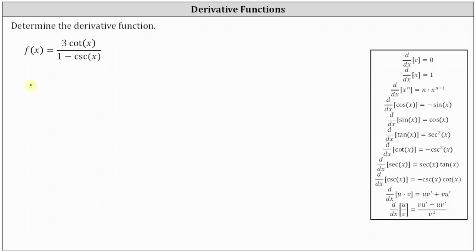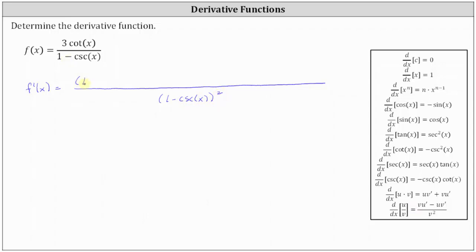Applying the quotient rule, f prime of x is equal to: the denominator is v squared, which in our case is the square of one minus cosecant x. In the numerator, we have v — which is one minus cosecant x — times the derivative of the numerator u prime, which is the derivative of three cotangent x with respect to x. Then we have minus the numerator u, which is three cotangent x, times the derivative of the denominator v prime, which is the derivative of one minus cosecant x.